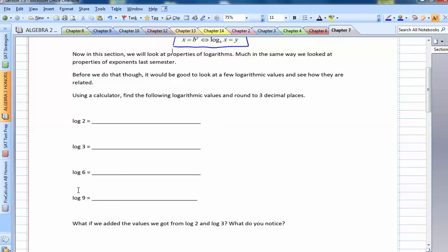So these are all common logs so we can use a calculator. If you type in log 2 in your calculator, hopefully you get .301. Then, if we plug in log 3, we get .477.